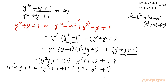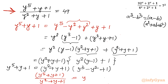If we divide both sides by (y² + y + 1), we get our LHS of the original equation. So (y^5 + y + 1) / (y² + y + 1) = y³ − y² + 1. I will replace our LHS by this cubic expression.